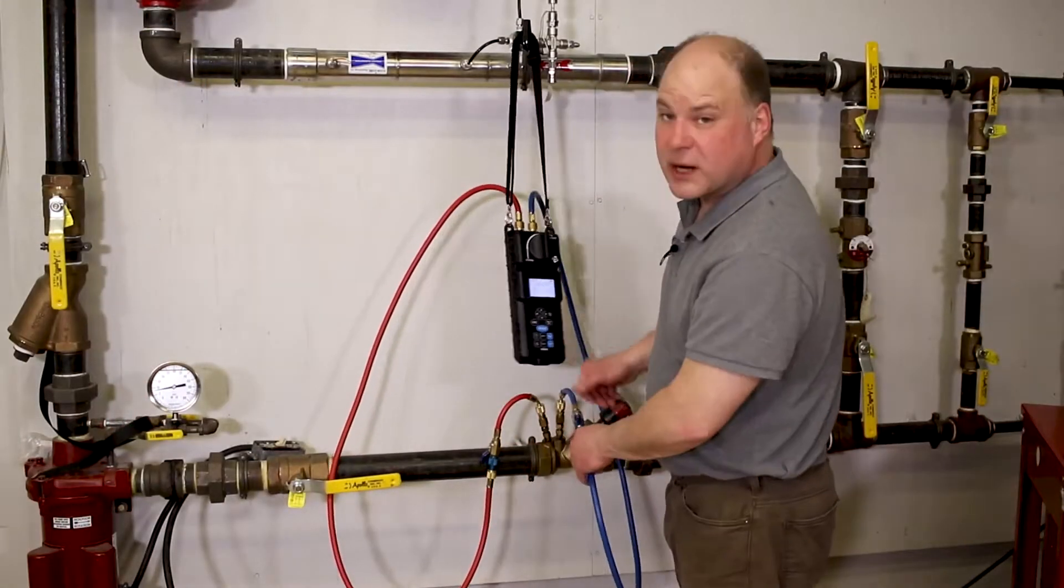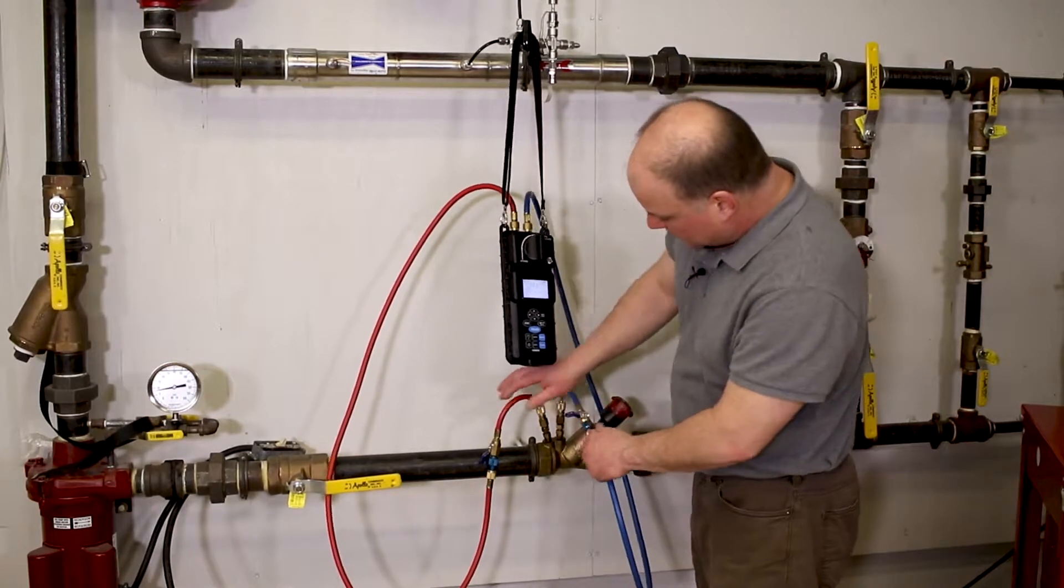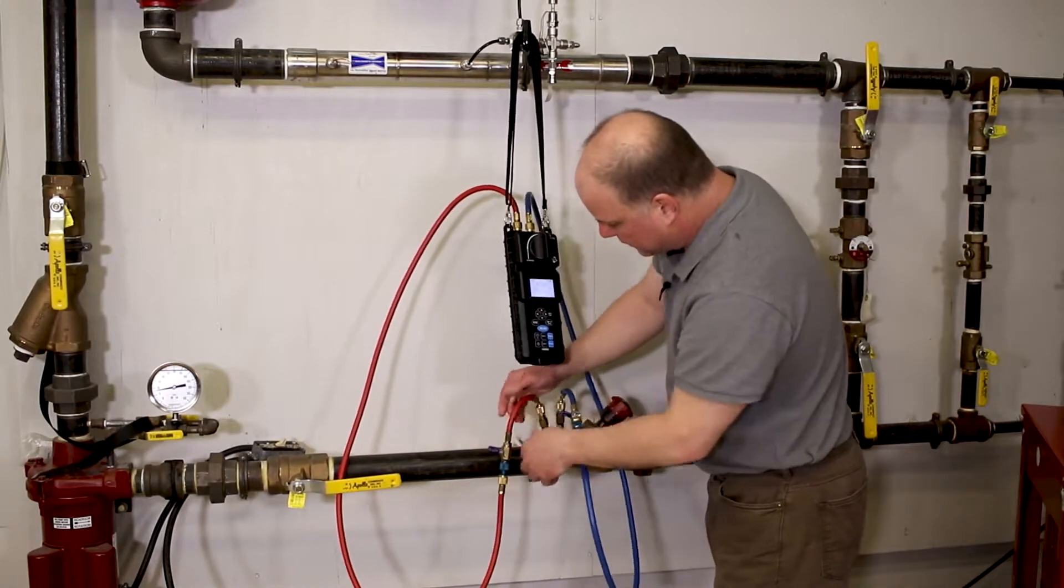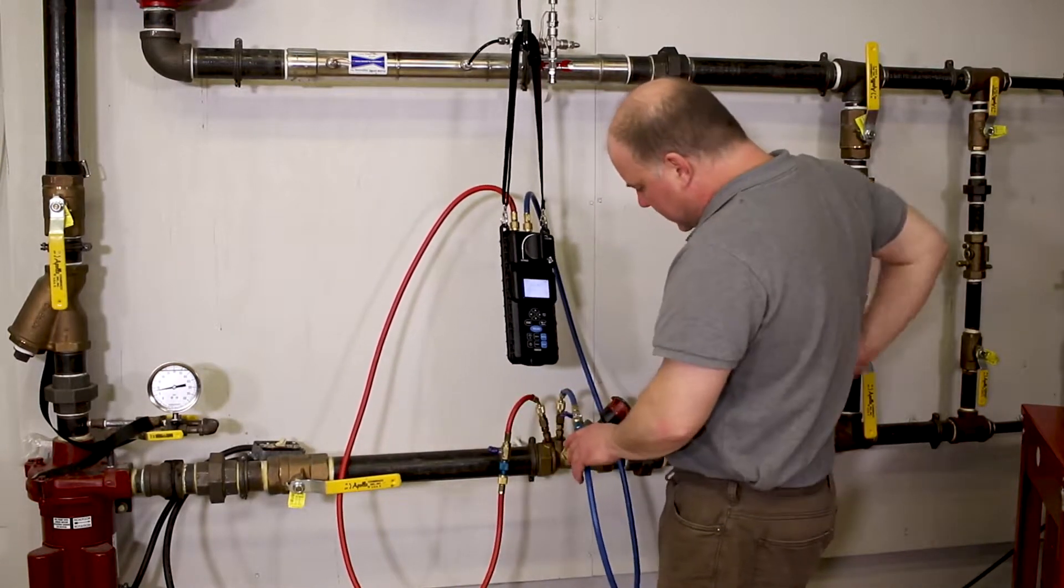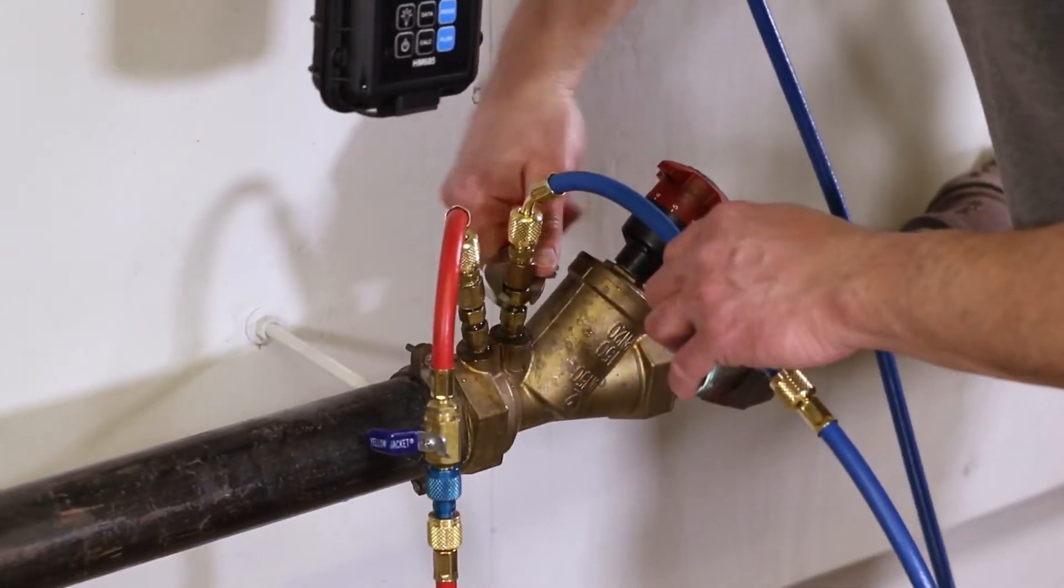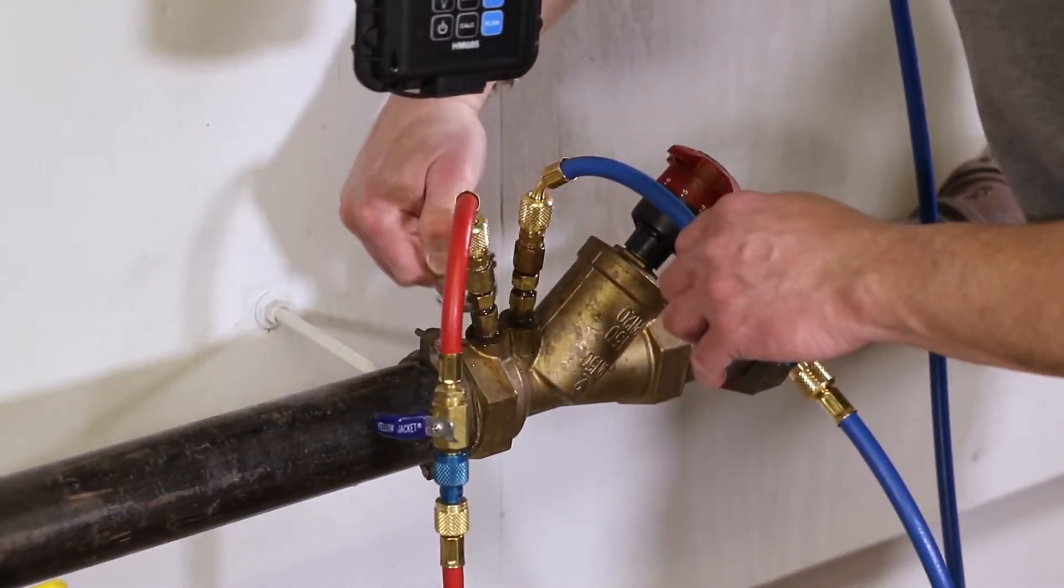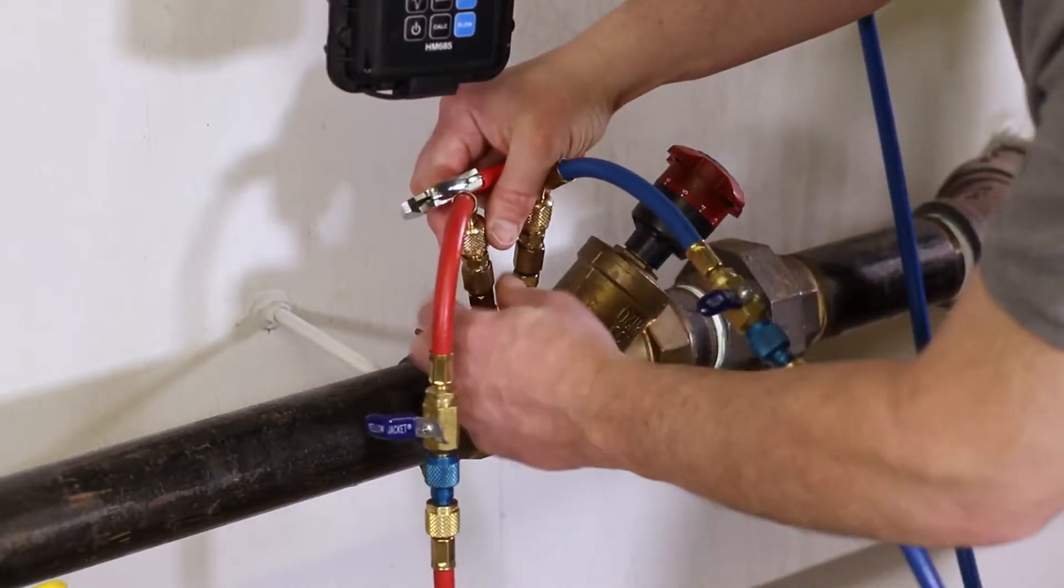When we're done taking measurements across the valve, turn the shutoff valves on the shorthand hoses to the off position. Disconnect from the valve under test.